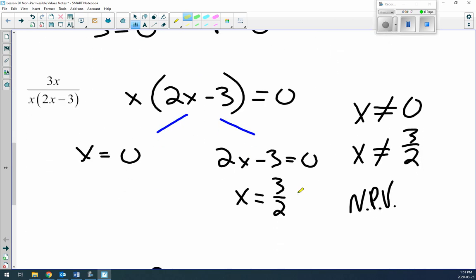Okay, this next one we have 3x over x times (2x-3). Again, we don't care about the numerator. All we care about is the denominator. So we set the denominator equal to zero and solve for both factors.